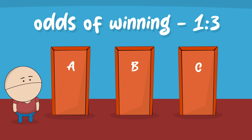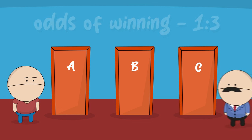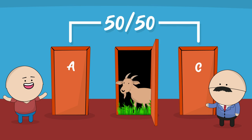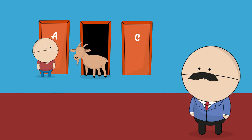You know your odds of winning are 1 in 3. But instead of opening A, the host opens B, revealing one of the goats. And you're ecstatic, because now you know your odds of winning have gone from 1 in 3 to 50-50.